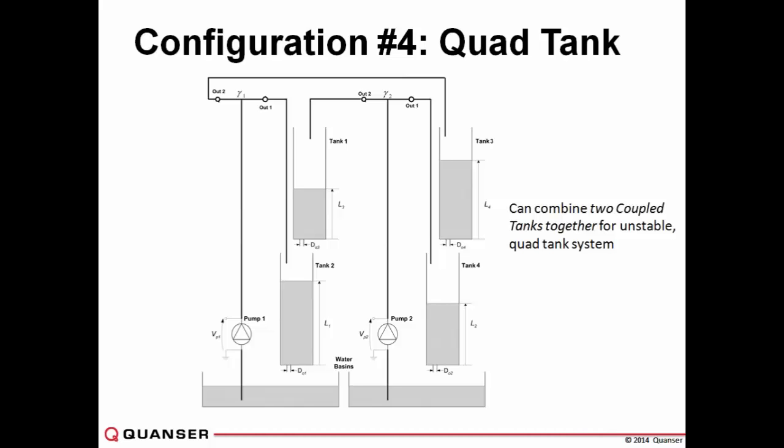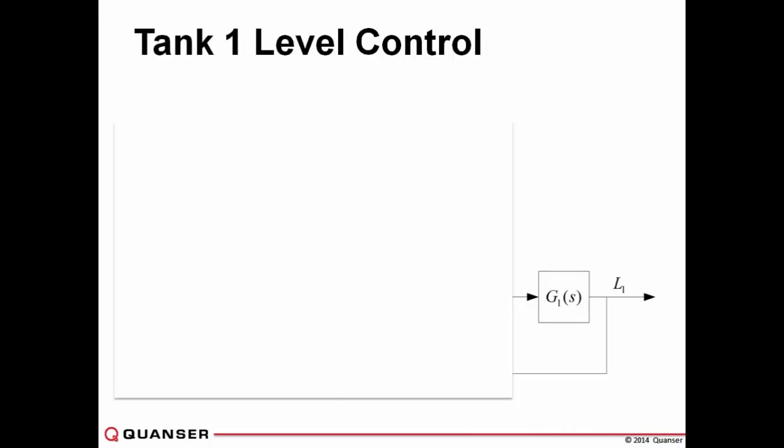We actually have another one called configuration number four, quad tank example. If you have two coupled tanks and you really want a challenge, then you can connect both of them together. There've been research papers published on this. Karl Åström and his student, for example, had a fairly famous research paper on the system. The quad tank is an inherently unstable system, and a very challenging one to stabilize. But you need two coupled tanks for this. People have done it before.